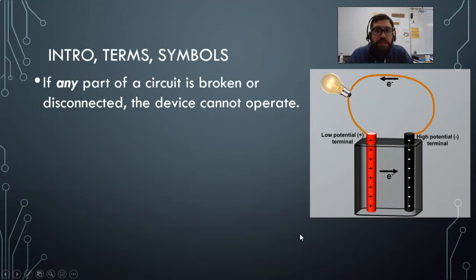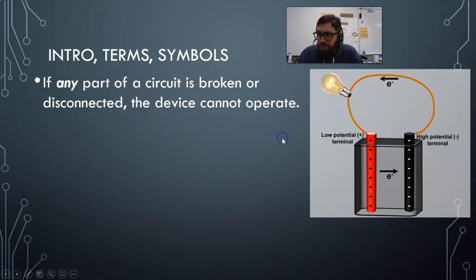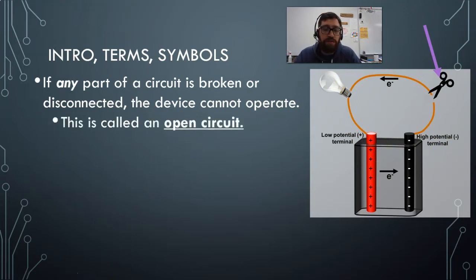However, if any part of this circuit is broken, anything is disconnected, the device cannot operate. If you look here on the top right side, let's say I take some scissors and I just cut the wire right there. Now the circuit is broken and it cannot operate. This light bulb will go out. The light bulb is okay, it hasn't burned out, it's fully operational. But the electrons cannot flow from the negative to the positive. There's no complete pathway for them to get there. So we call this an open circuit. Open for circuits is bad. The circuit is inoperable if it is open.